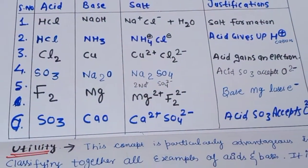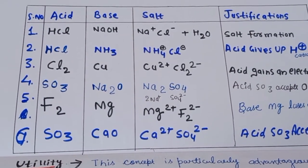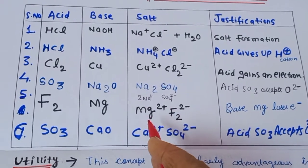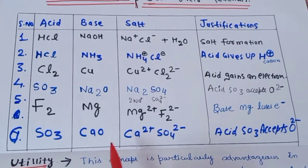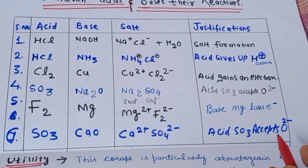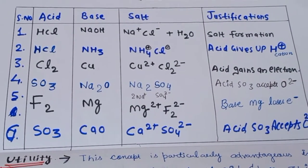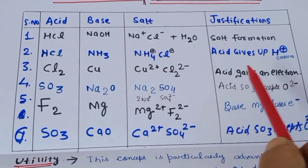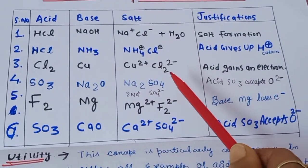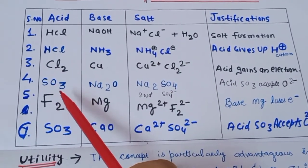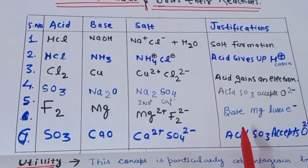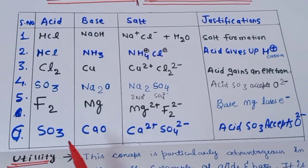Fifth, F2 and Mg react to form magnesium fluoride — Mg loses electrons, acting as a base. Sixth, SO3 plus CaO forms calcium sulfate CaSO4 — SO3 again acts as an acid by accepting the oxide ion. So in these examples we see: salt formation, acid giving up H+ cation, acid gaining electrons, and acid accepting oxide anions — while metals acting as bases lose electrons.